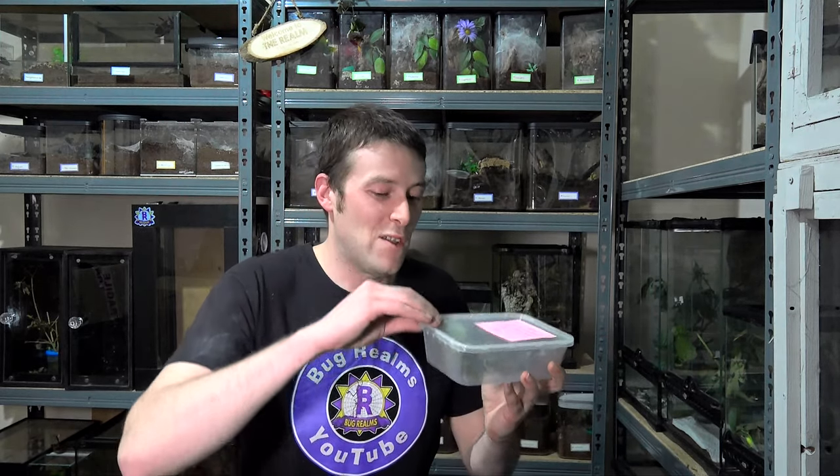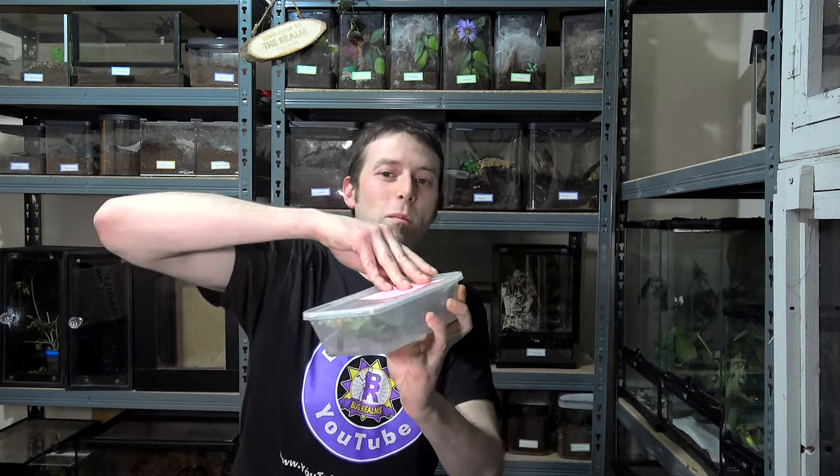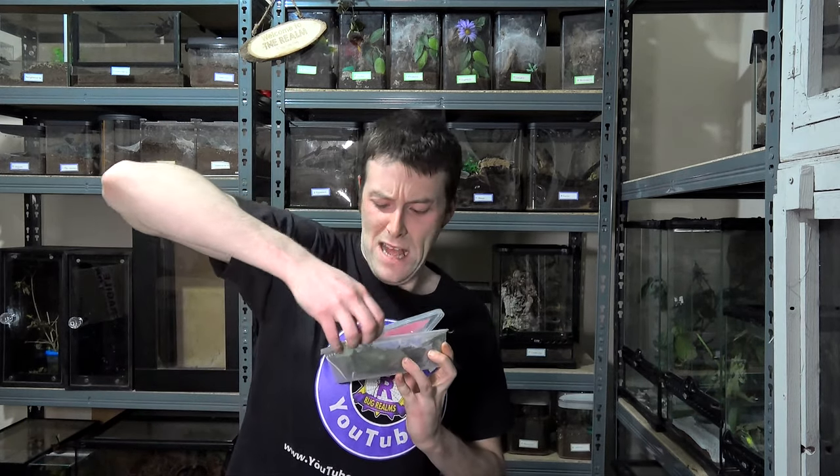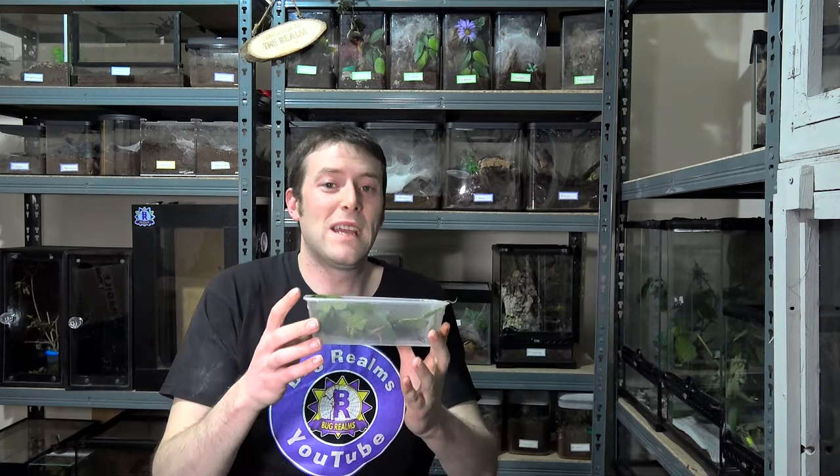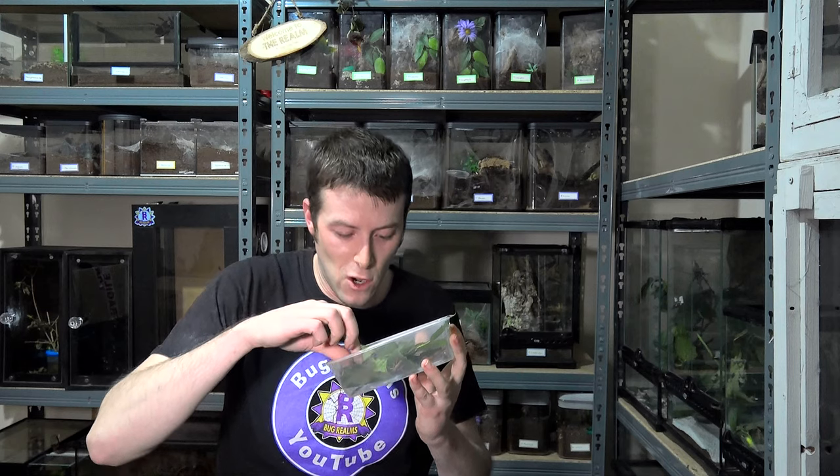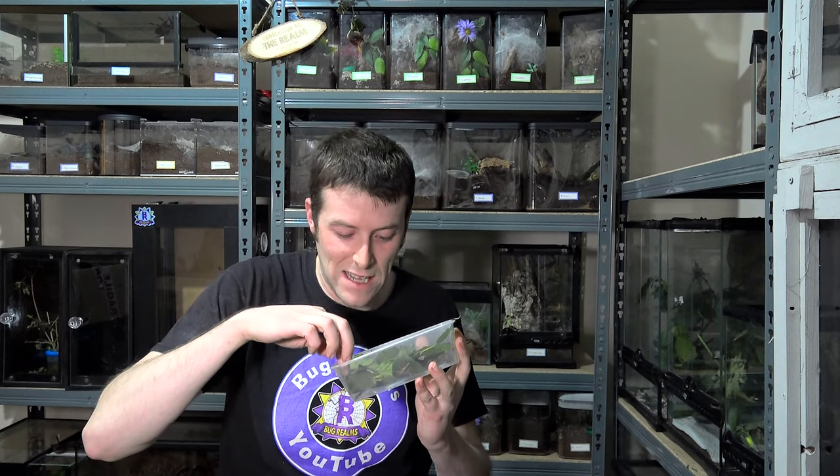These are the M. Bullosa stick insects, Mernciano bullosa. I don't quite know the pronunciation. Now I'll give you a better close up of these guys in just a moment. I just want to check that everything is alive and well. Now this is not a beginner species so if you are new in the hobby I don't recommend getting these.